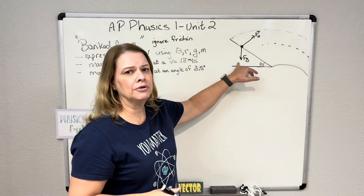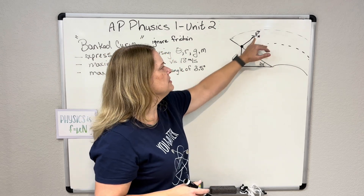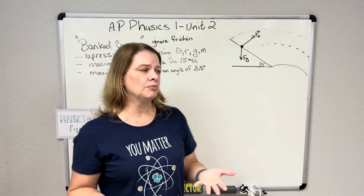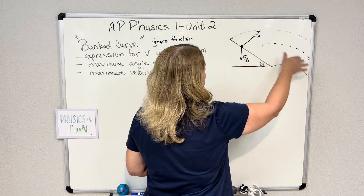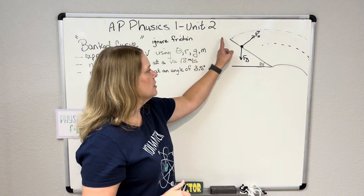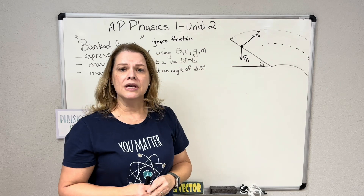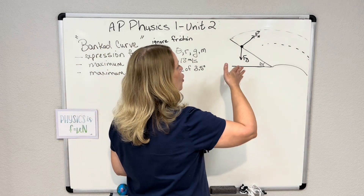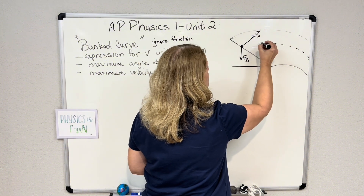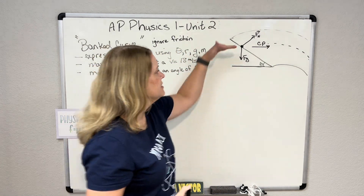I already started the free body diagram here. I have force due to gravity that's straight down and I have normal that's perpendicular to the road. Those are the only two forces because we're ignoring friction to make this problem a little bit more manageable. This whole road is banked at an angle. The first thing you need to do is not think of this as a ramp. We're not going to be summing forces perpendicular and parallel to the ramp. This car is moving in a circle at an angle, so this is the direction of centripetal motion — straight into the center, center-seeking.